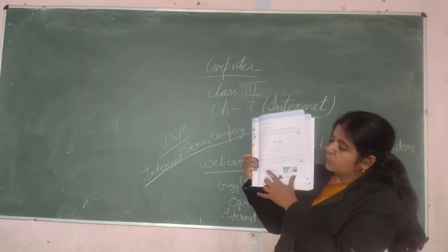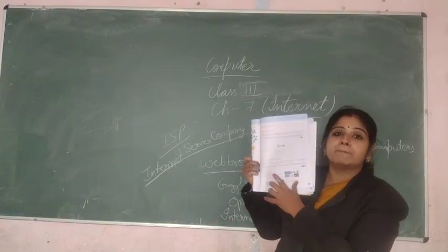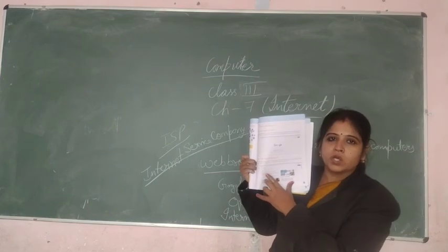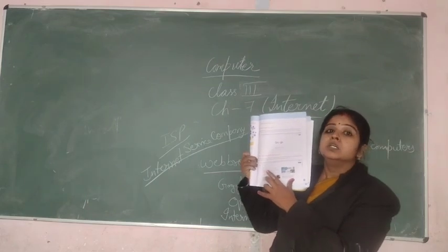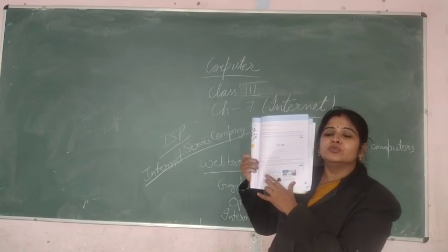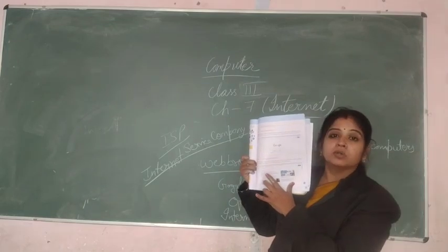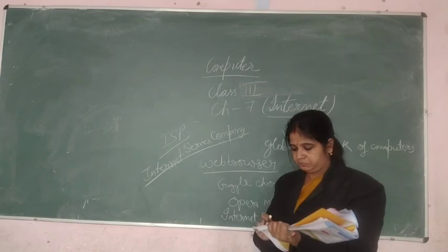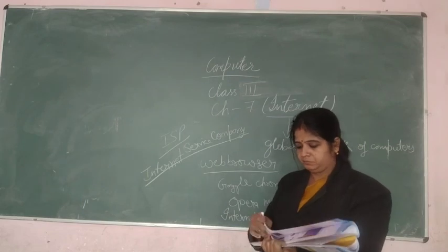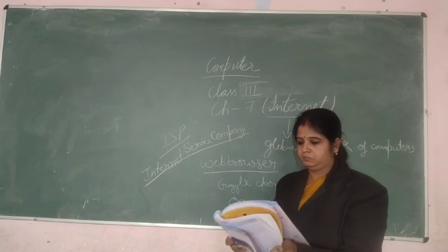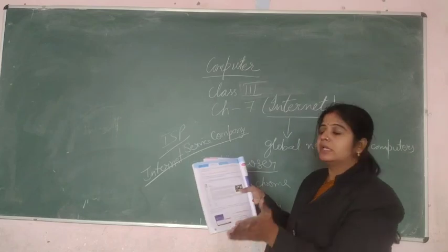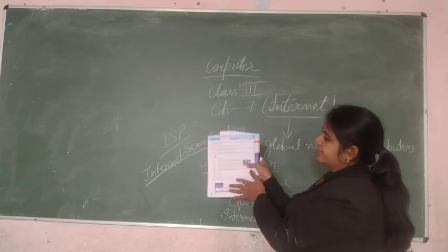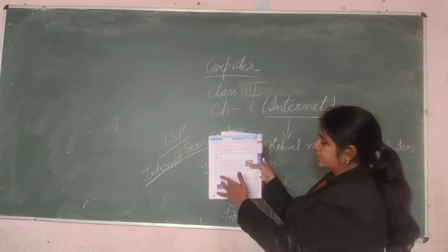That blue color text is called a hyperlink, which is connected with another website. Whenever you click on it, you will move to that particular website. And when you click on that particular website, the information appears on your screen. That is the third step.